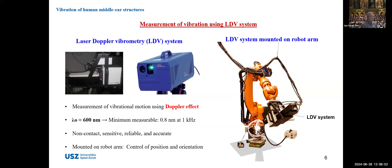One of the methods widely used to measure this vibrational motion is the laser Doppler vibrometer, or LDV system. This LDV system uses the Doppler effect to measure vibrational motion, and the minimum measurable amount is about 0.8 nanometers at 1 kHz. This method provides non-contact, sensitive, very reliable, and accurate measurement, and is one of the most widely used approaches to measure vibrational motion of middle ear structures.